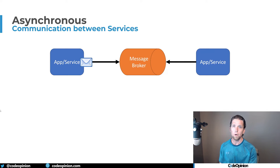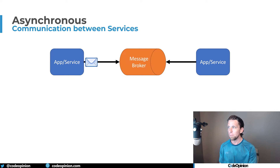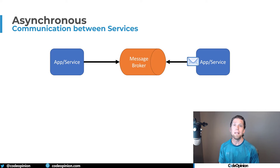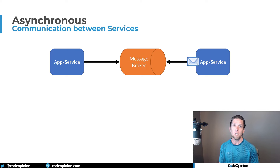When communicating between services, however, I recommend asynchronous messaging. This means a service, when something has happened to it, publishes an event to the message broker, and you may have zero, one, or many services that consume that event. The reason I don't recommend synchronous calls like HTTP between services is because of the complexities related to latency, availability, and resilience. Check out my video about REST APIs and microservices for more info.